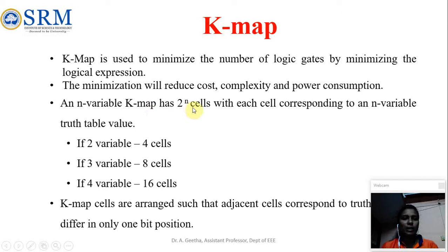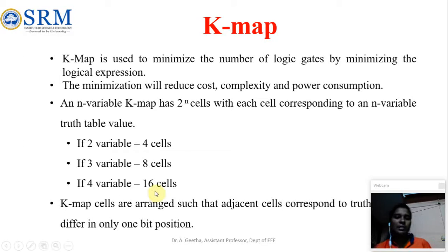For example, if you are going to solve a 2-variable problem, it should have a 4-cell K-map table. Similarly, for a 3-variable problem, 2 power 3 is 8, so an 8-cell K-map table has to be utilized. Similarly, for a 4-variable K-map, 16 cells need to be used.